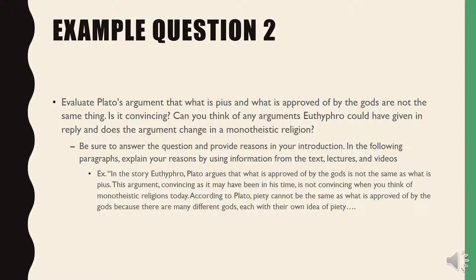When you get a question with two or more sub-questions embedded in it, find the main question and answer that first so your reasons also address the other questions. Here, the main question is whether the argument is convincing — and from there you explain how a better argument might be made through the lens of a monotheistic religion, which flows from answering that central question.